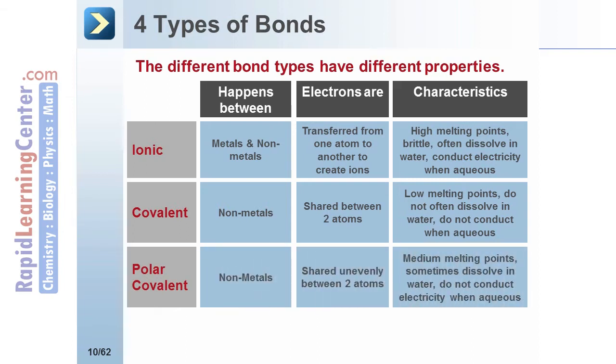Polar covalent compounds are when two non-metals share electrons unevenly. They have medium melting points. Some compounds dissolve in water, but if they do dissolve, they do not conduct electricity.